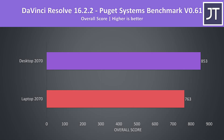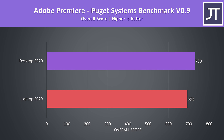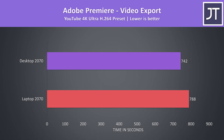For content creator workloads, DaVinci Resolve was tested with the Puget Systems benchmark and the desktop scored almost 12% higher than the laptop. Adobe Premiere was also tested with the Puget Systems benchmark, and the difference is less pronounced here with the desktop scoring just 5% higher. When looking at raw export times, Premiere did gain a little more improvement with the desktop, completing nearly 6% faster. The Puget Systems test also covers more than export times — such as live playback — but either way the difference was not much.